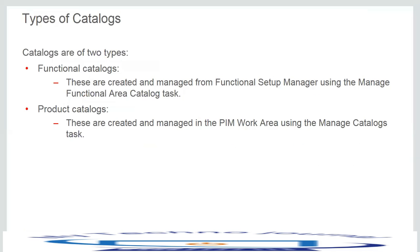Item catalogs have two types. The first is functional area catalogs, which are created and maintained through the manage functional area catalogs task in the setup and maintenance work area — that is FSM, the functional setup manager. Product catalogs are created and maintained in the product information management work area. Note that product catalogs cannot be assigned to a functional area.